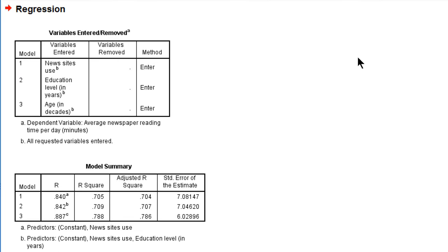SPSS has estimated three regression models for us and the models are summarized in the first table. The first model only contains news sites use as a predictor, the second one adds education, and the third one adds age. Each of those models has a particular model fit, an R-square value. We can see in the second table that model 1 already explains more than 70% of the variance in newspaper reading time, so this is a very good predictor. The second model predicts average reading time hardly better, but the third model including age has a better prediction of about 8 percentage points.